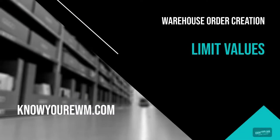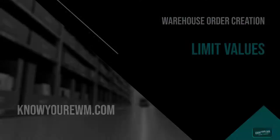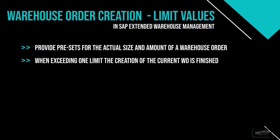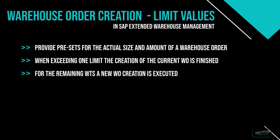Limit values. With limit values we can provide presets for the actual size and amount of a warehouse order, which basically results in limiting the number of warehouse tasks within a warehouse order in the EWM system. As soon as one of those limits is exceeded, the actual creation of the current warehouse order is finished with all warehouse tasks that were part of the creation up to the one that exceeded the limits. For the remaining warehouse tasks that didn't make it into the warehouse order, a new warehouse order creation is executed and the logic repeats itself.